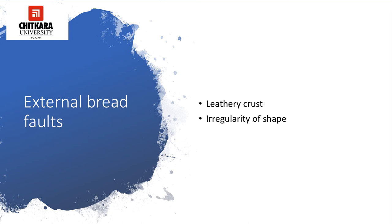The causes for irregularity in the shape of the bread include: usage of too strong or weak flour, wrong quality of water, less bread improvers, improper mixing — either over or under — rough handling of the dough, dough too slack or too stiff, over ripened dough, excess dough compared to the bread pan size, rough handling of the bread, improper fermentation or proving, overloading in the oven, or a very loose molding.